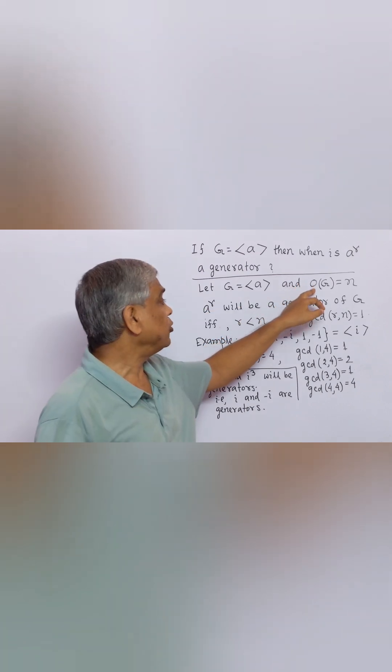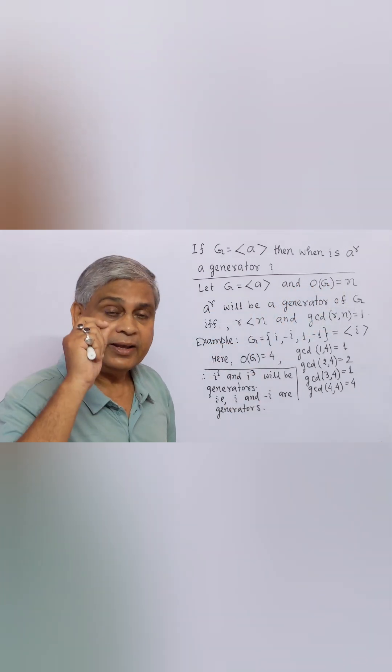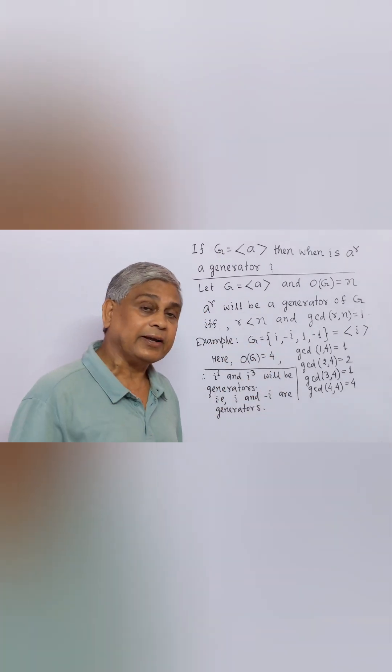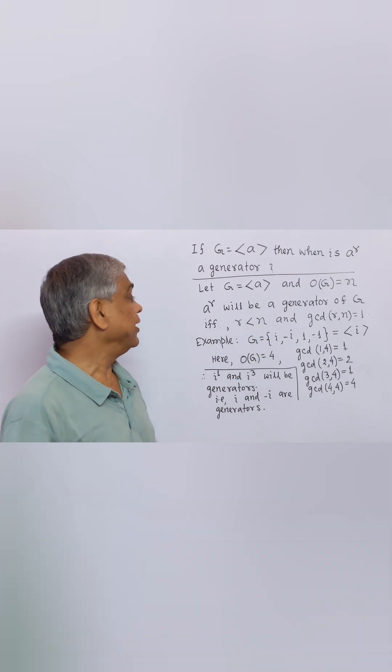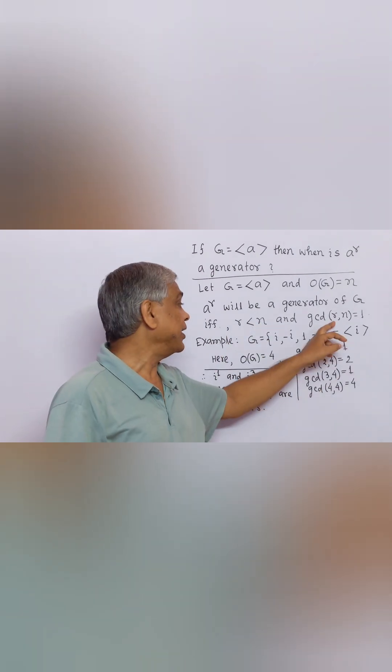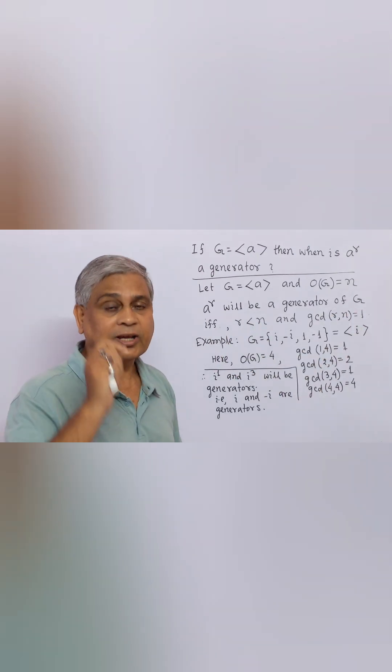Let order of G equal to N, then A to the power R will be a generator if and only if R is less than N and GCD of R and N equal to 1.